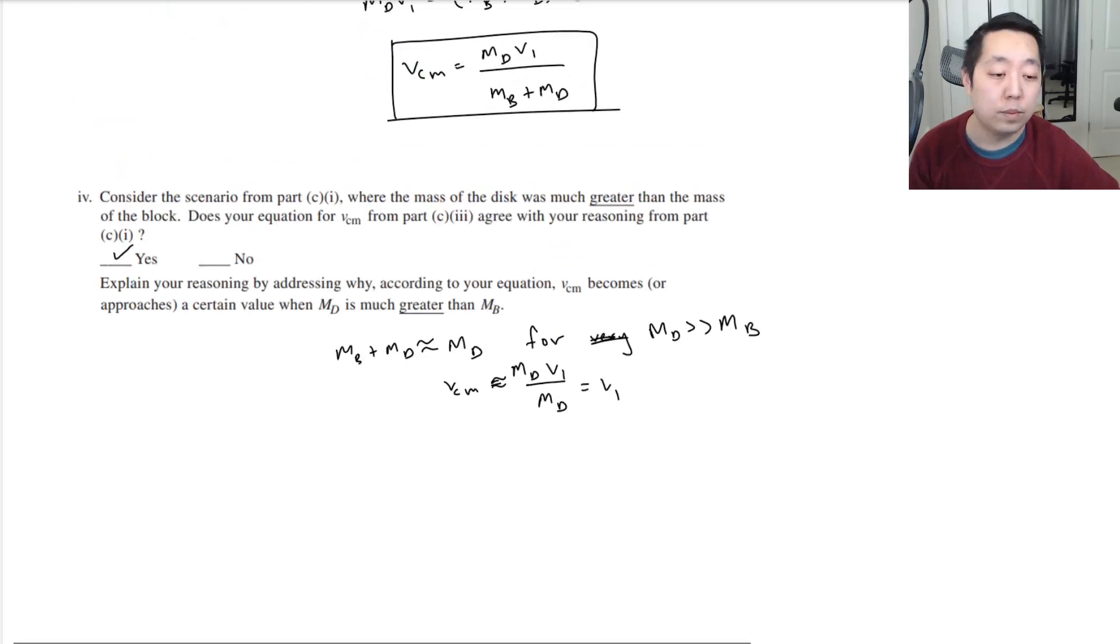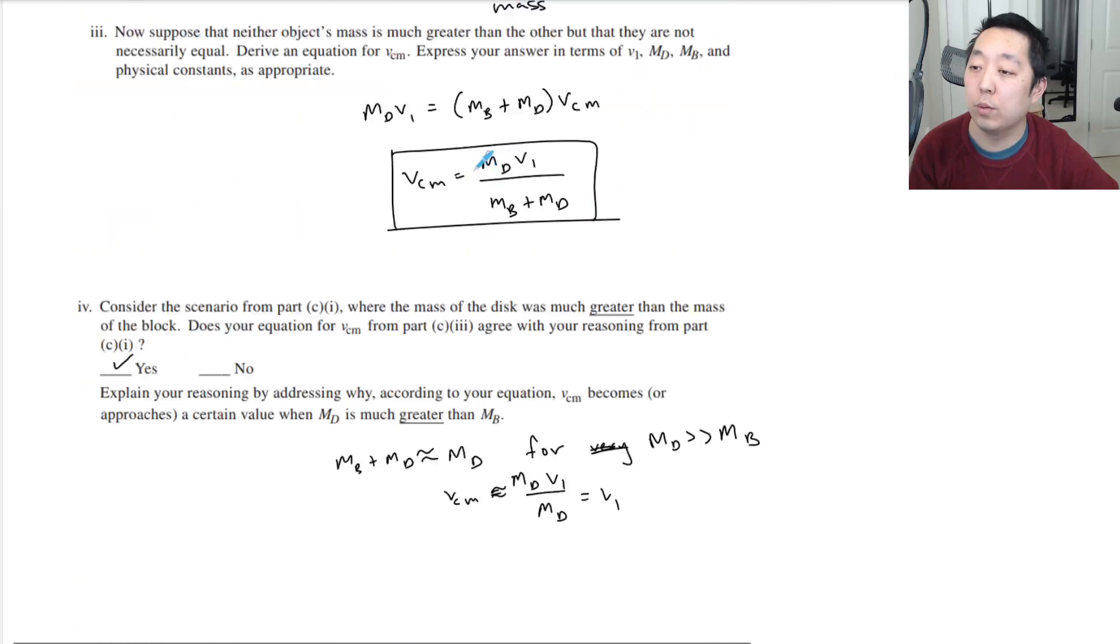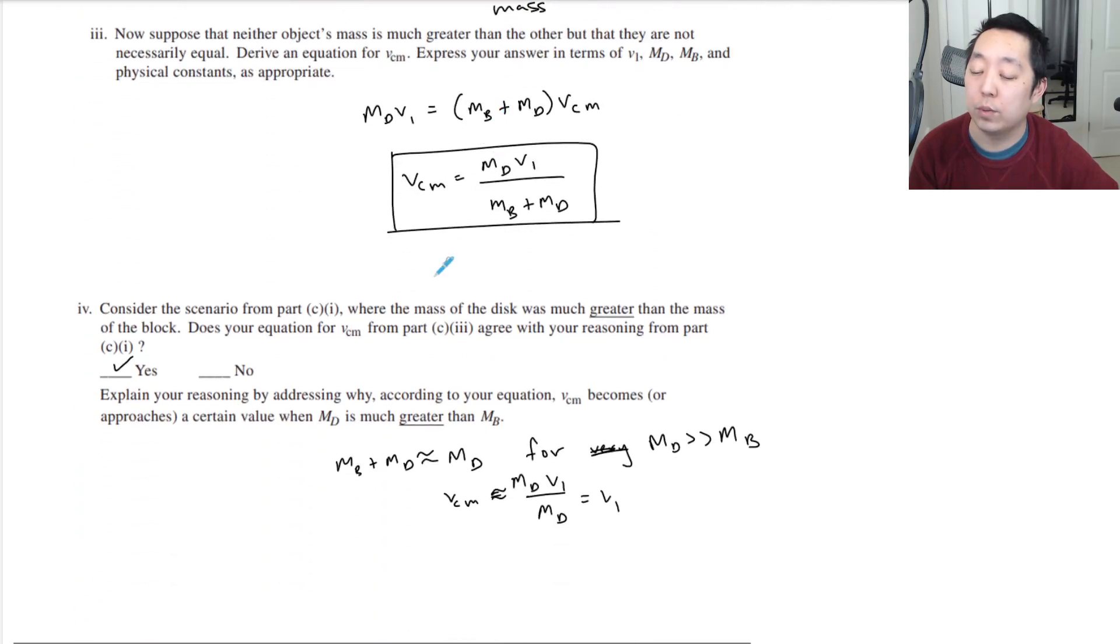Does your equation for VCM from part C3 agree with the reasoning for part C1? I would say yes. They didn't want you to do the other way around, they just want you to do that one. Okay, that's it.